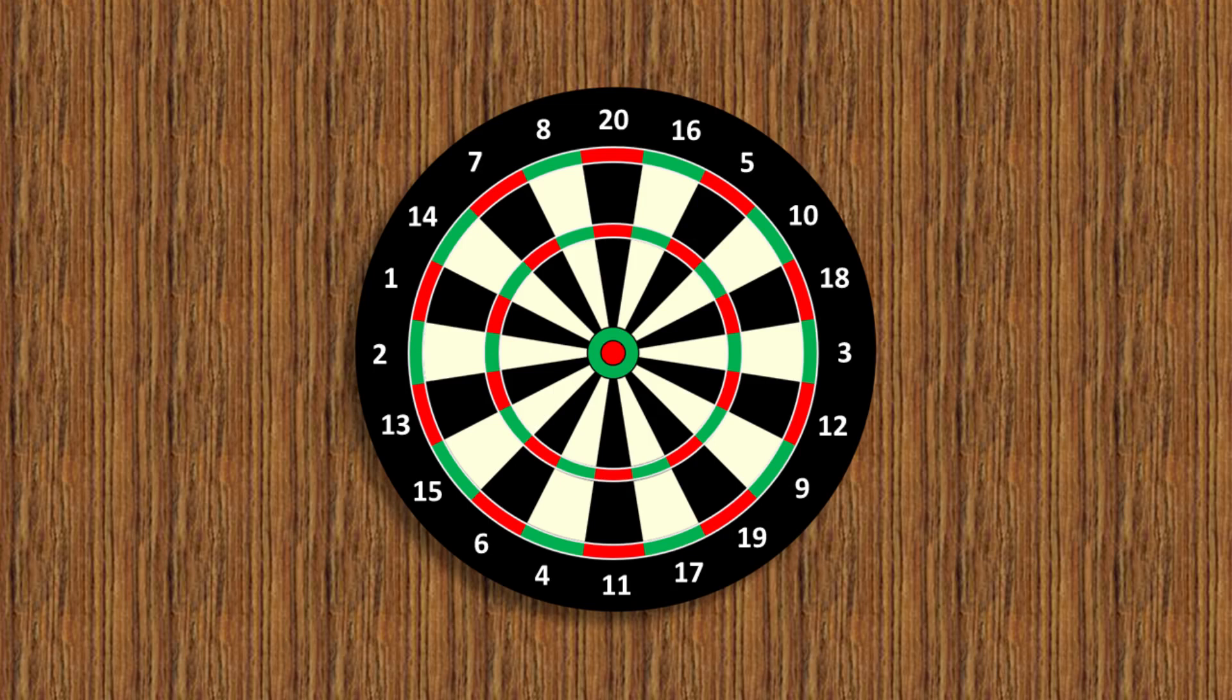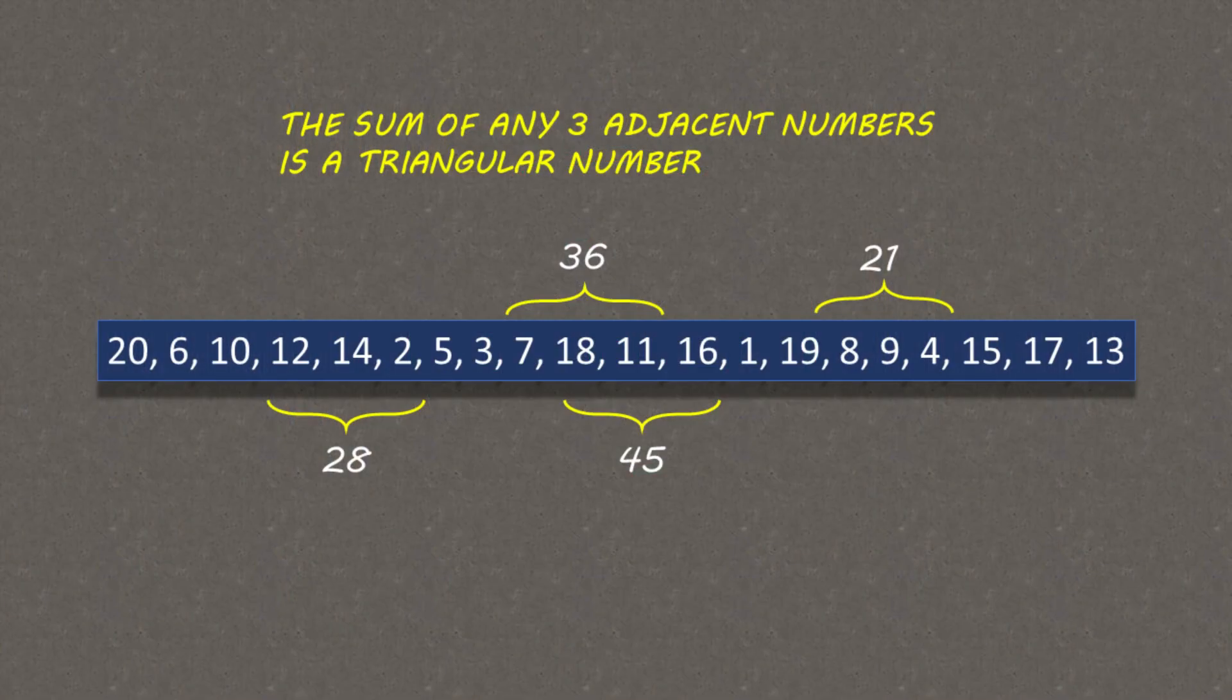Solving the bonus question about three adjacent numbers isn't quite so easy using a graph. So I just wrote a program to search by trial and error, and this is the one and only sequence I've found that contains the maximum 18 triangles, and the corresponding dartboard looks like this.